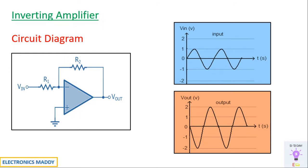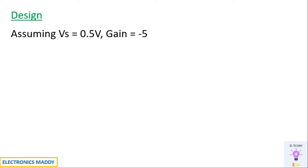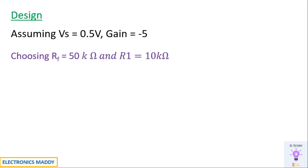Now, what is the design aspect with respect to the operational amplifier? Every design requires certain assumptions — without assumptions you will never be able to start a design. Our first assumption is Vs = 0.5 volt, a sinusoidal signal with a voltage of 0.5 volt, in order to obtain a gain of about minus 5.